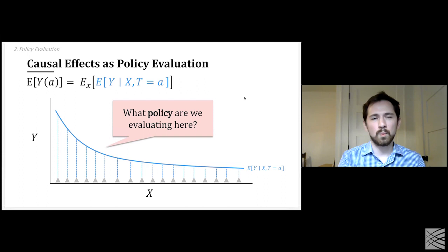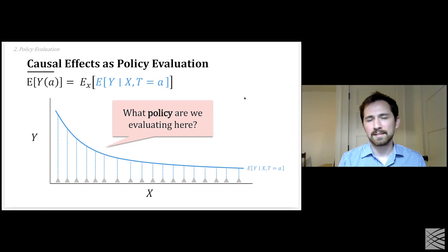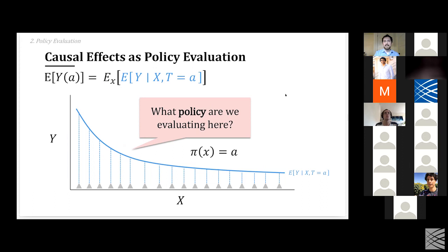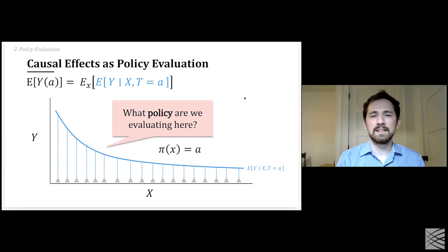What policy is being evaluated by the average potential outcome expression? It's a constant policy — just 'always do A.' It's not much of a policy because we're not using X at all, but it is, in some sense, a value of a policy. I'll use that term more as I talk about policy evaluation.